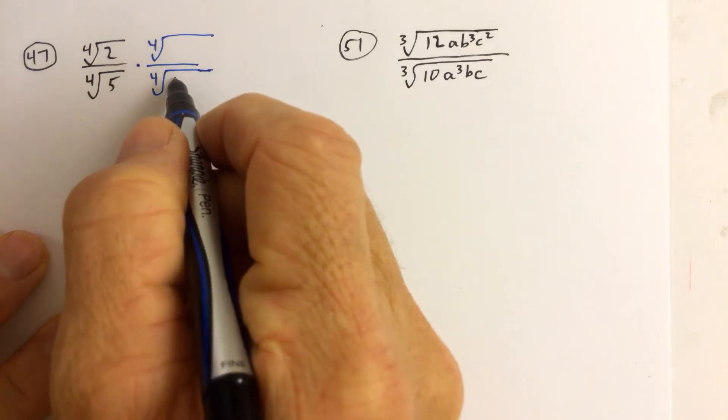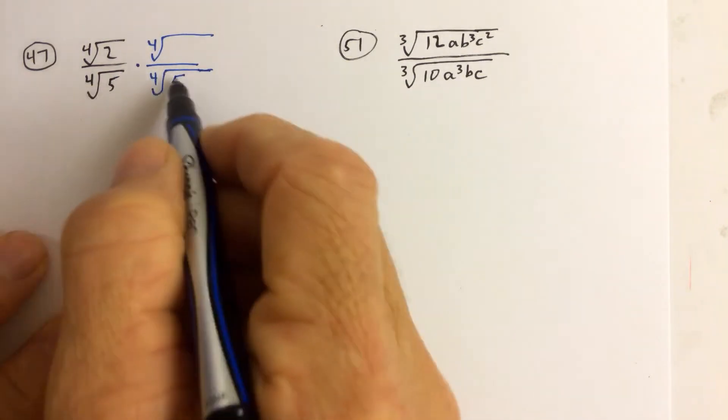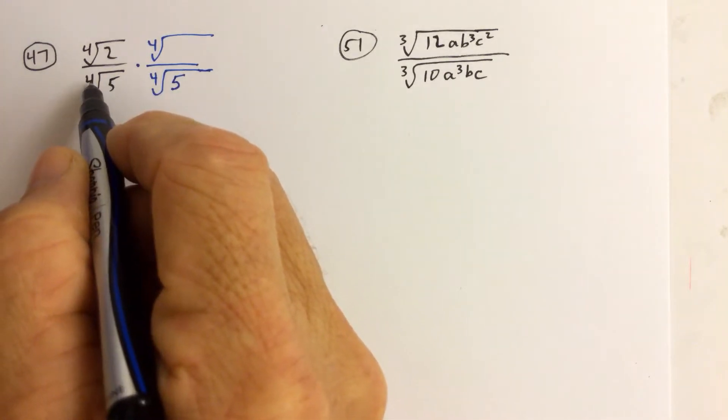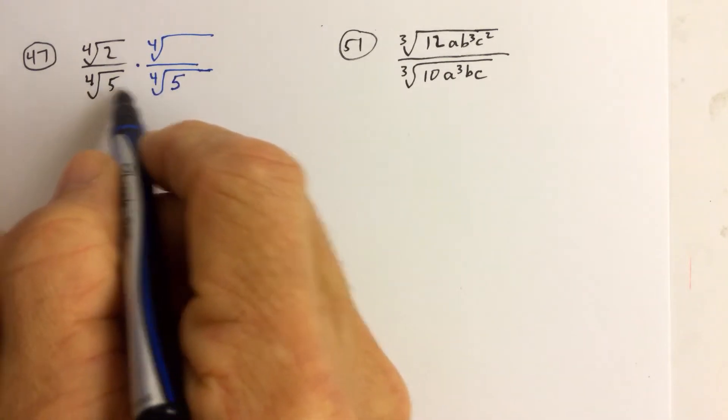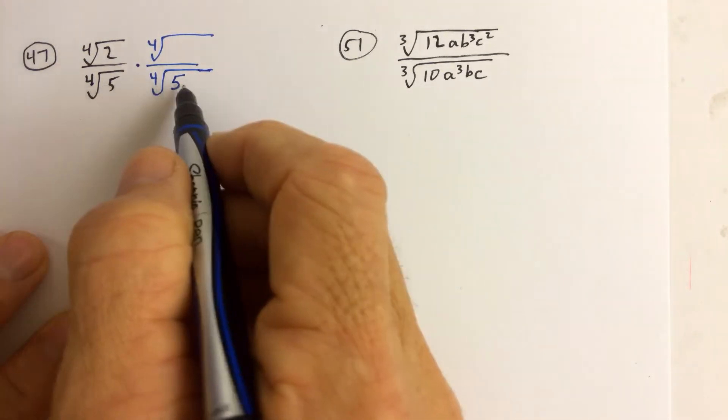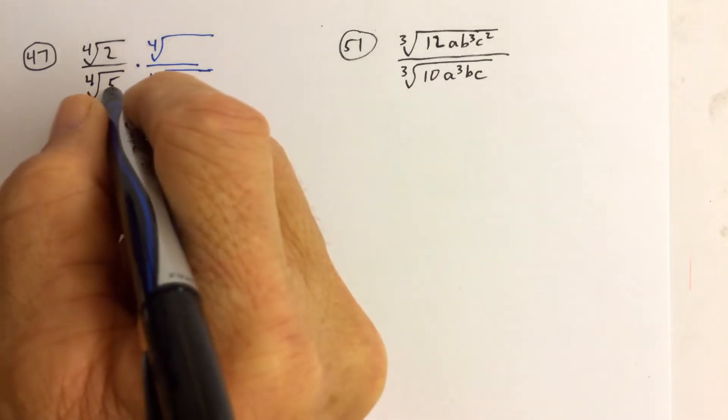Well, if I were to multiply just by 5, then if I want to get rid of the radical symbol, I actually have to look at this 4 here. The root is 4, meaning I need 4 of a kind under the radical. So I can't just multiply by the 4th root of 5. I have to actually add 2 more 5s to that.